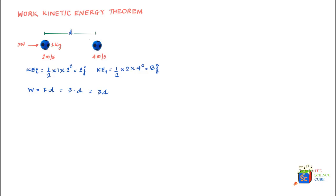The work-energy theorem states that the change in kinetic energy of a mass equals the work done on the mass. Mathematically, KE_final − KE_initial = W. We can rearrange this to write KE_final = KE_initial + W.